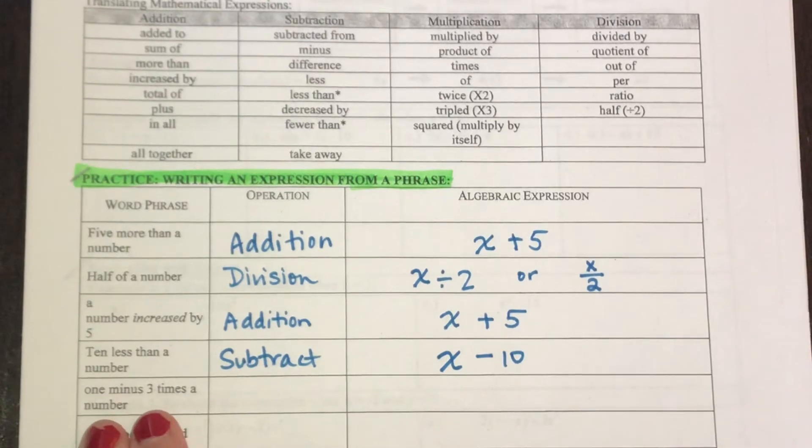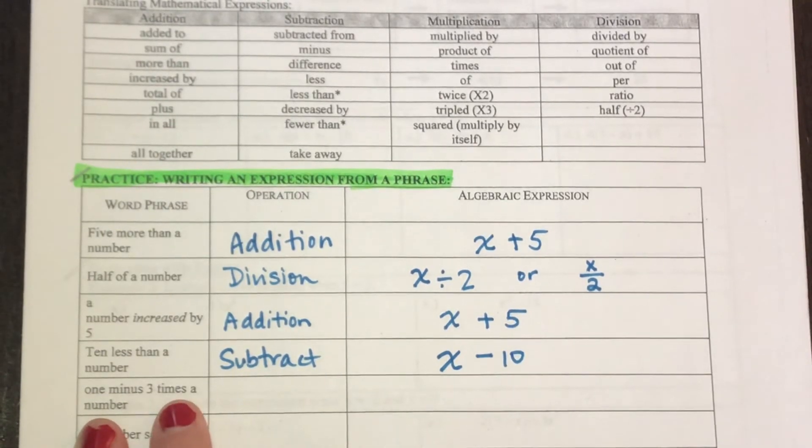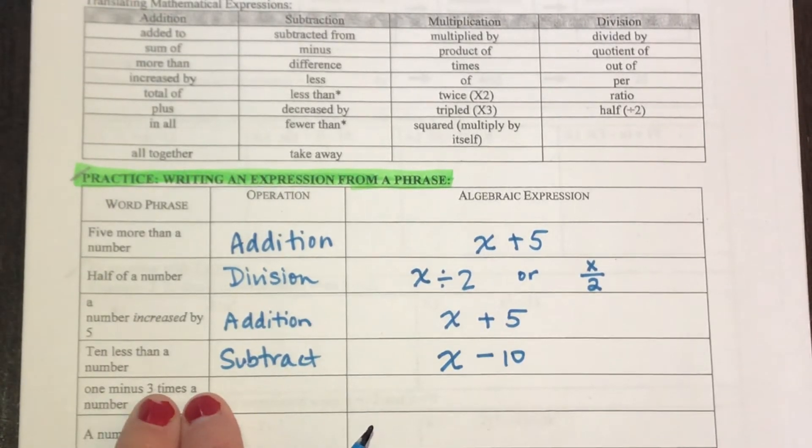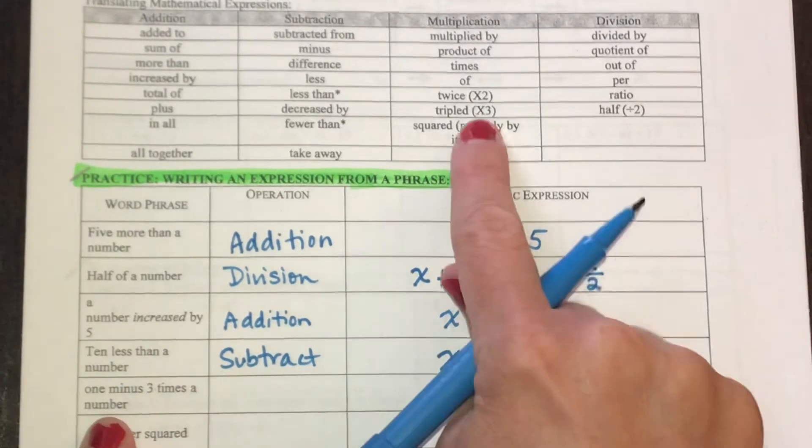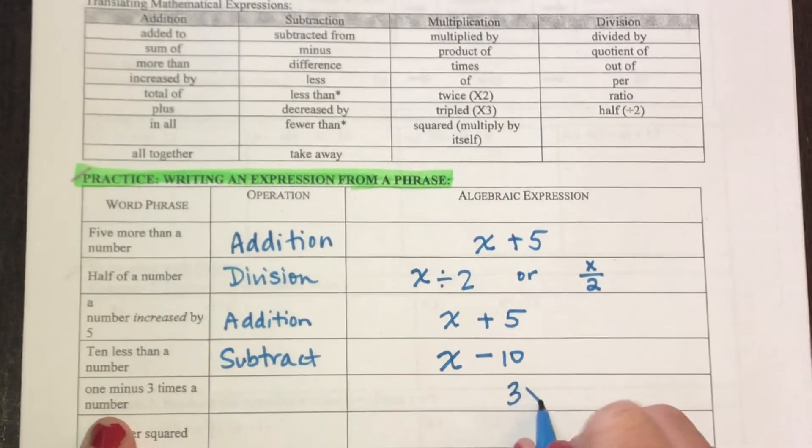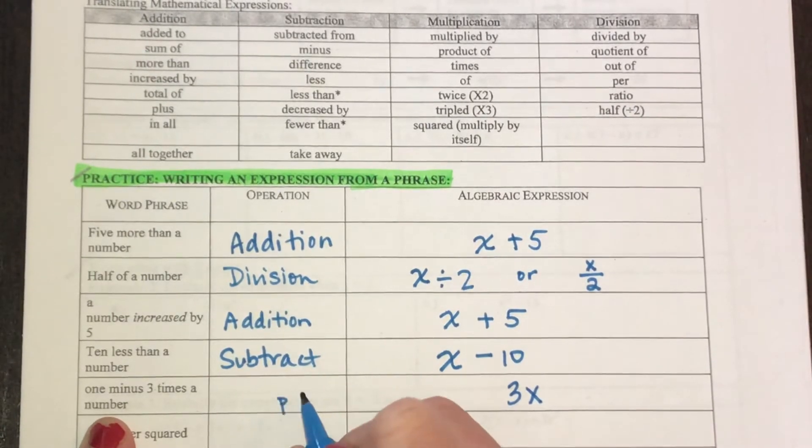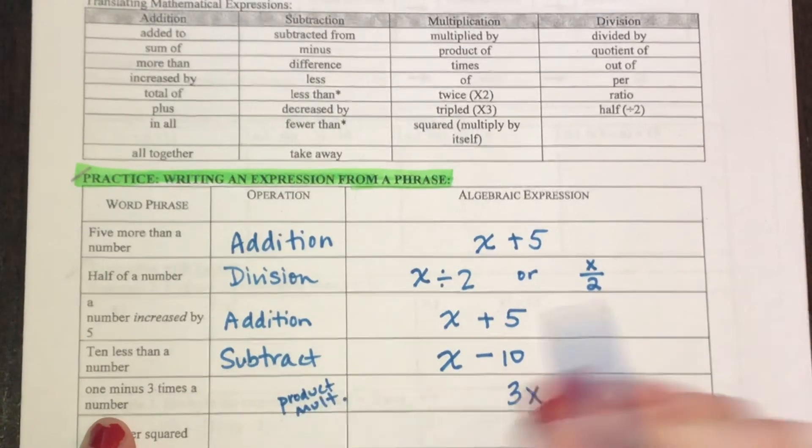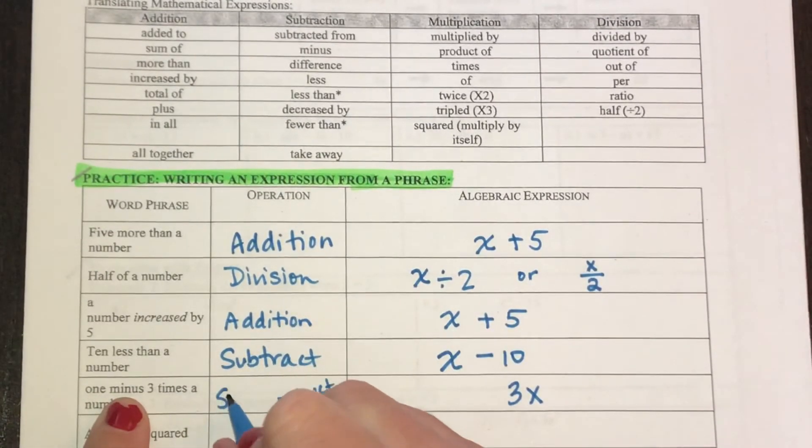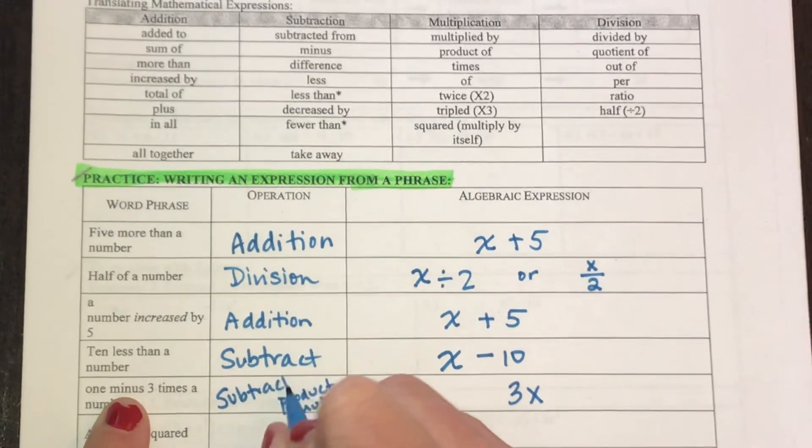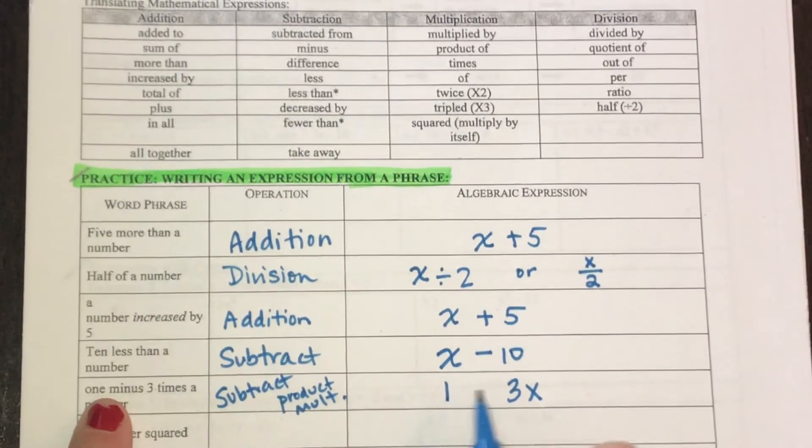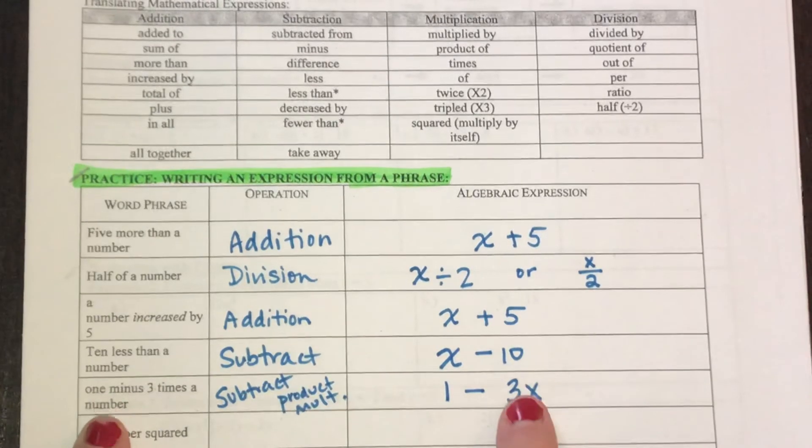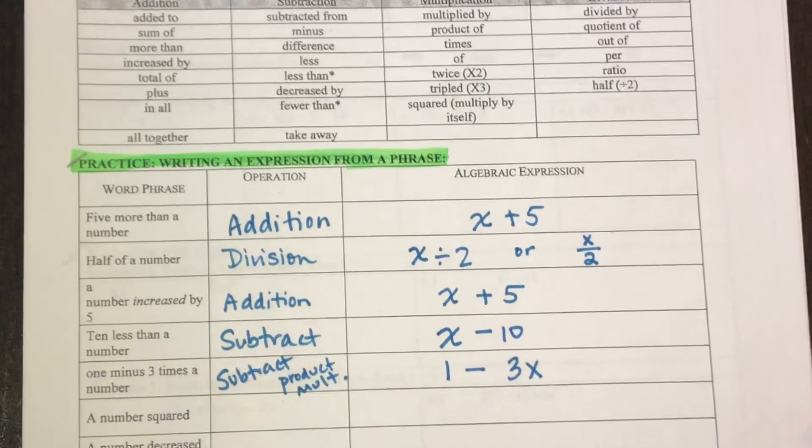Now my next phrase is one minus three times a number. One minus three times a number. Three times a number, so that's a triple, means I'm going to have a 3X somewhere. So I know I have a product or a multiply here. And then minus is the subtract. One minus one, then the minus sign, three times a number. That's a tougher one, I think.